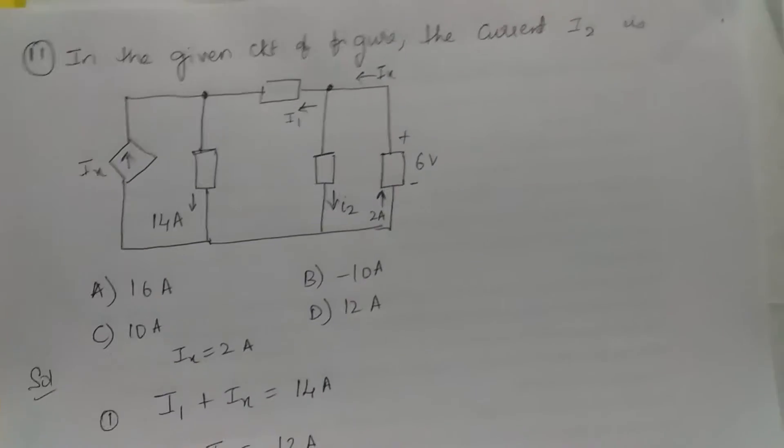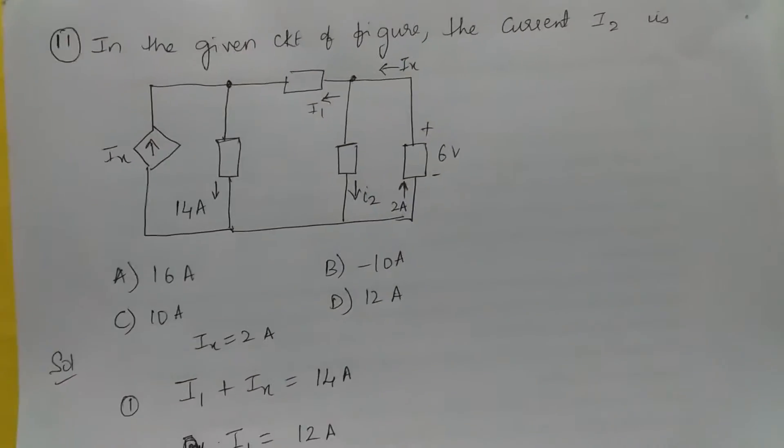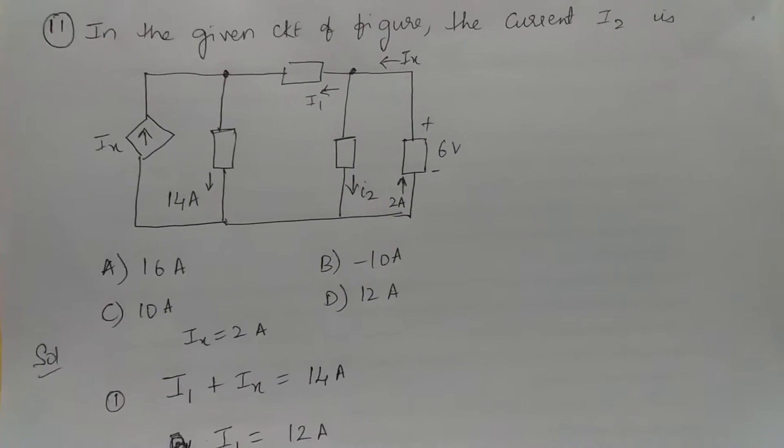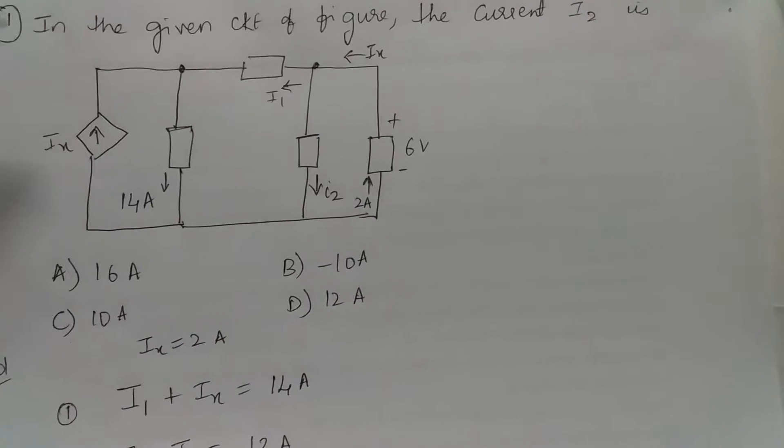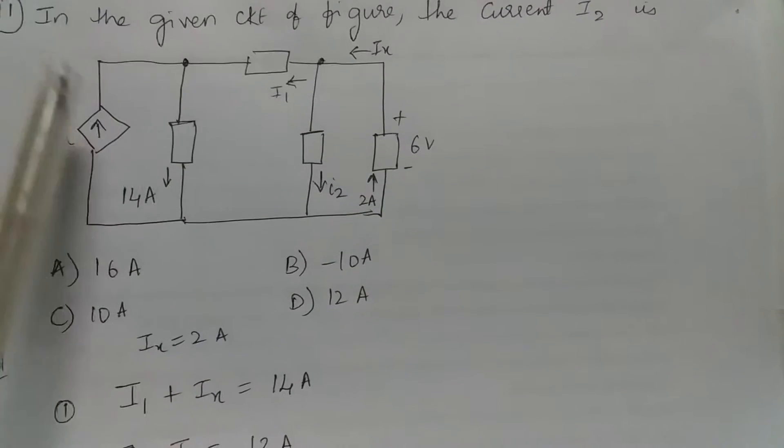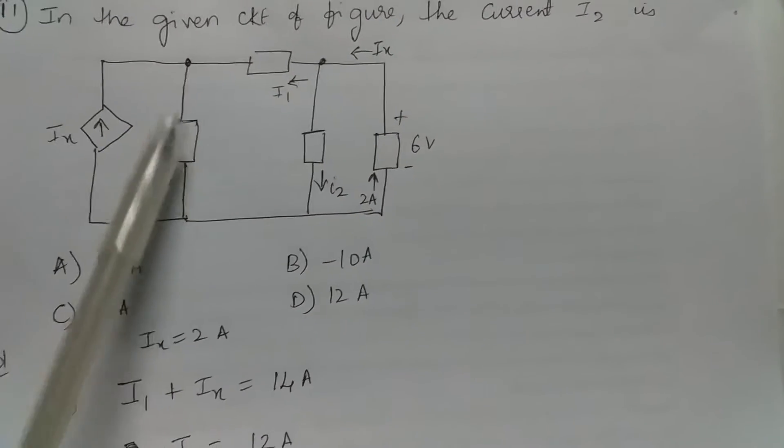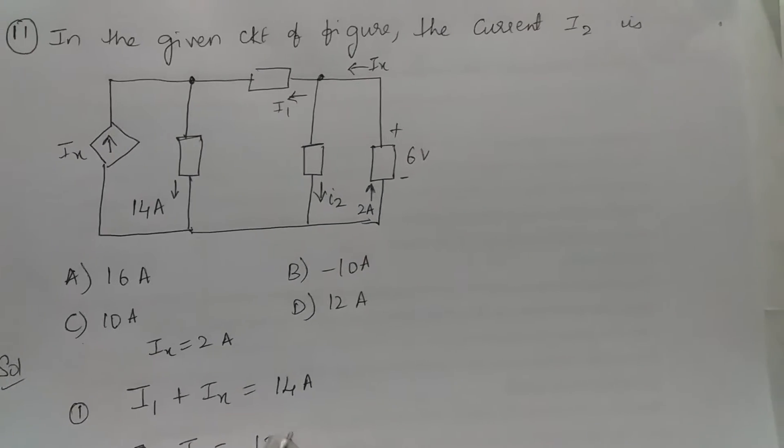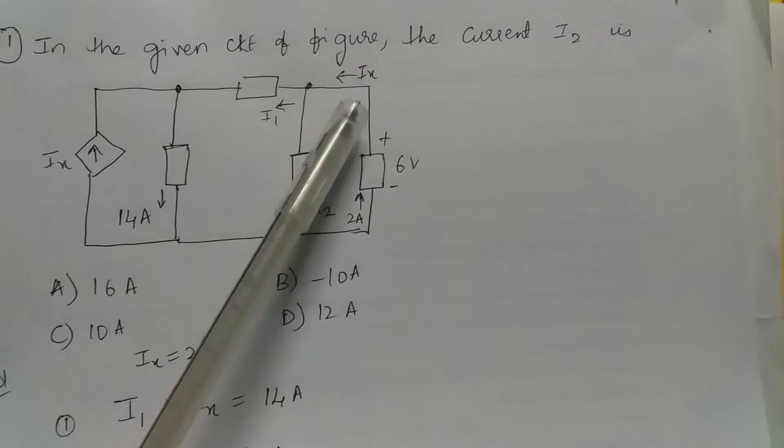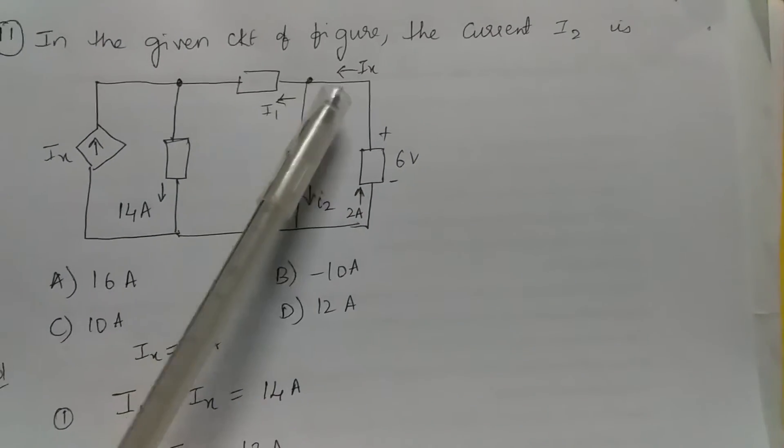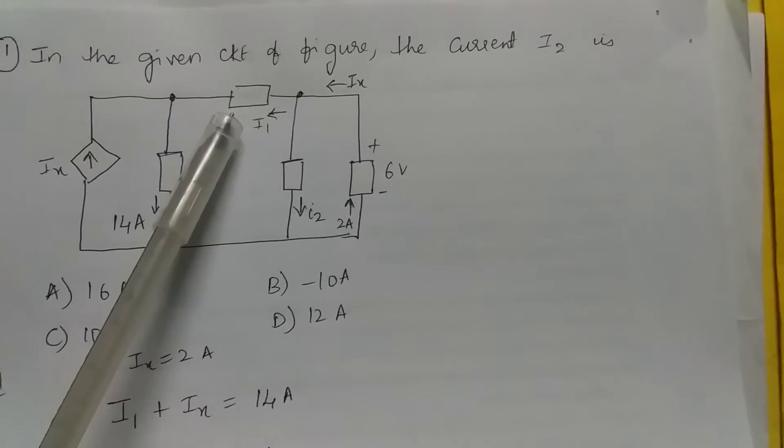Now let's have a look at some more questions. In the circuit of figure, the current I2 is: Apply Kirchhoff's current law. I1 is entering this junction and Ix is also entering this junction, and this 14 amps is leaving the junction. So I1 plus Ix equals 14 amps. And if you see here, this is 2 amps, so Ix is 2 amps.